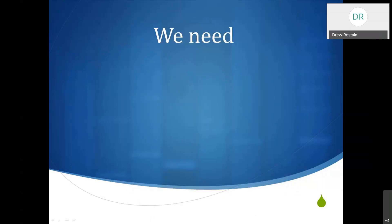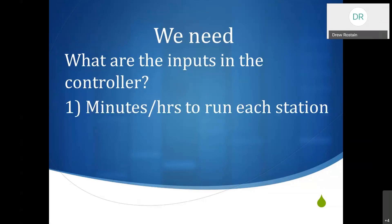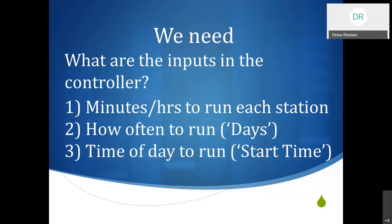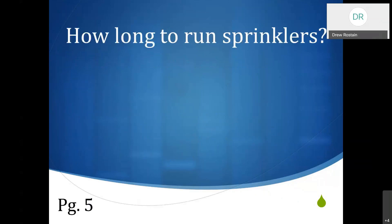What do we still need to know? We know our plant types and sprinkler types, but we still need some additional information. The inputs of the controller are: number one, what are the minutes or hours to run each station? How often do we need to run — that's under the days section. And third, what time of day to start. We need to translate what we know from our landscape watering guide into these controller inputs.